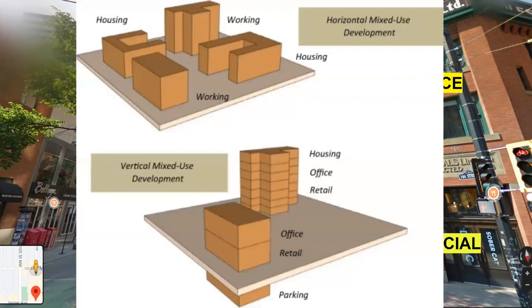It's also important to note that mixed-use development can be vertical in nature or horizontal in nature. Vertical development is like what we just saw, where the building combines different uses within the same building, whereas horizontal mixed-use development combines single-use buildings and a range of land uses within one block. And if we were to take a closer look at other parts along the street, we would see examples of both vertical and horizontal mixed-use development.